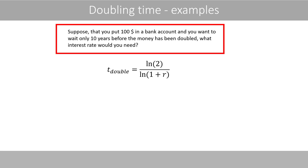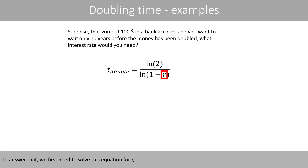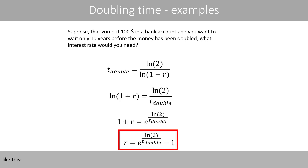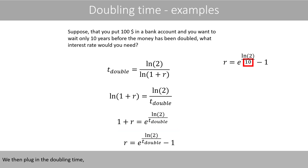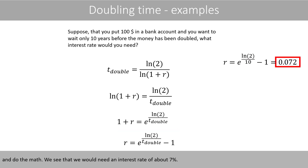Now suppose that you put $100 in a bank account and want to wait only ten years before the money has doubled. What interest rate would you need? To answer this, we first solve the equation for R. We plug in the doubling time and do the math, and we see that we would need an interest rate of about seven percent.